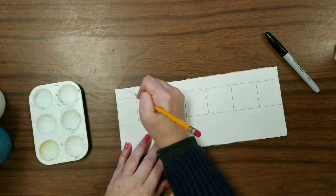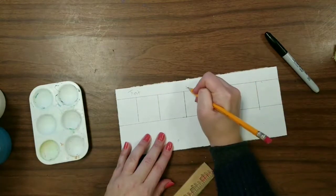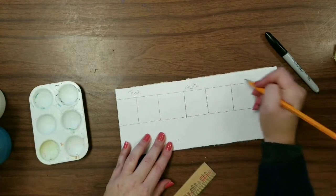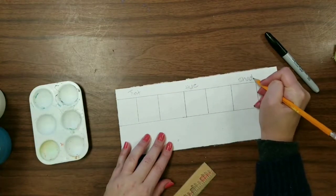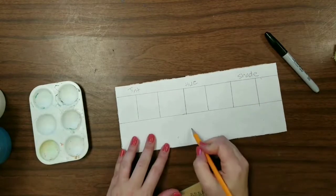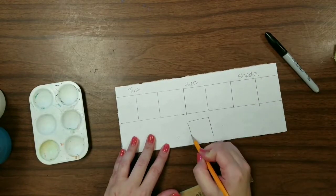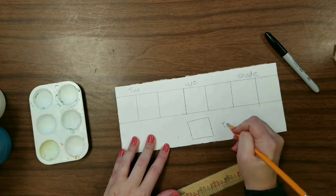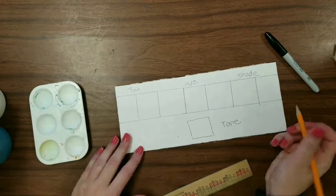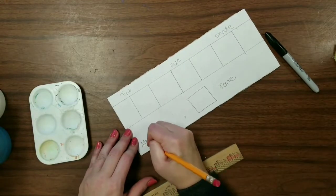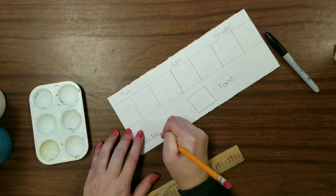I'm going to mark that tint, hue, which is color, shade. And down below, we're going to make one extra box for tone. Put your name and your code in the corner.